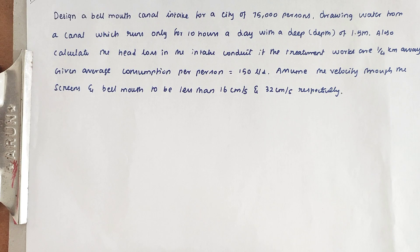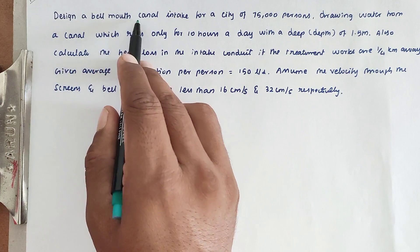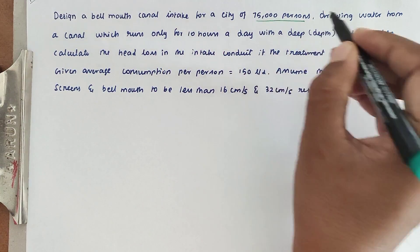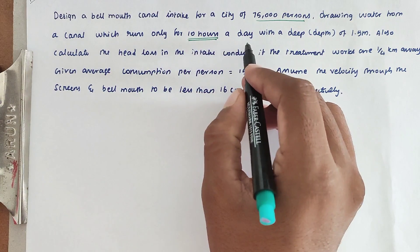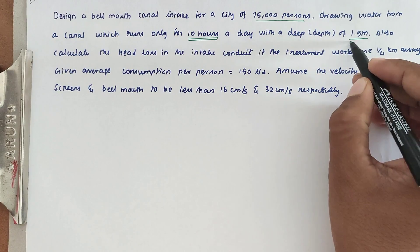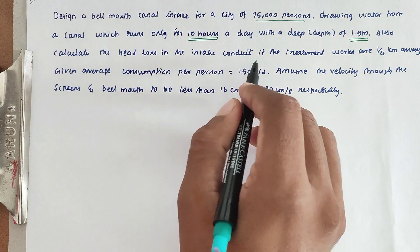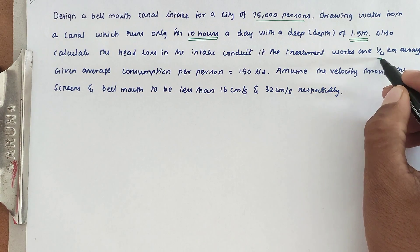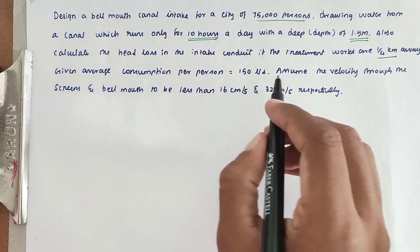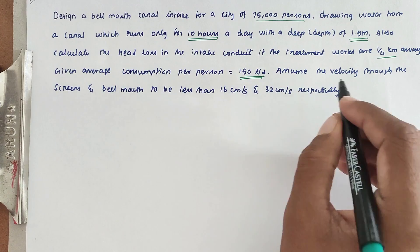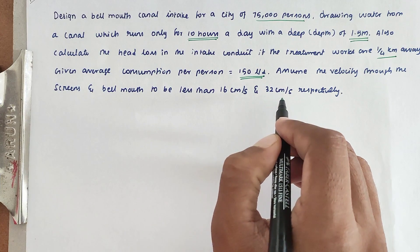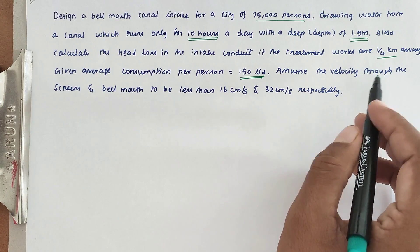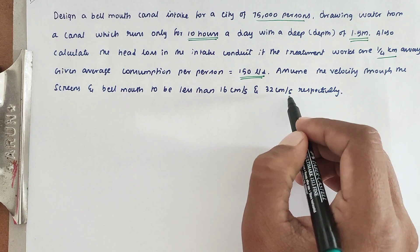Hello friends, welcome to civil engineering exam. Today we are going to see the problem related with water supply engineering in the topic of design of canal intakes. The problem is: design a bell mouth canal intake for a city of 75,000 population drawing water from a canal which runs only 10 hours per day, with a depth of 1.5 meter. The velocity through the screen and bell mouth is to be less than 16 cm/s and 32 cm/s respectively.